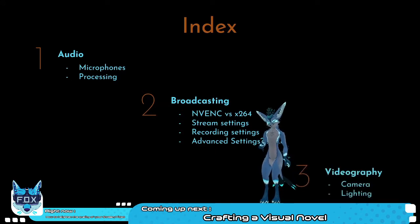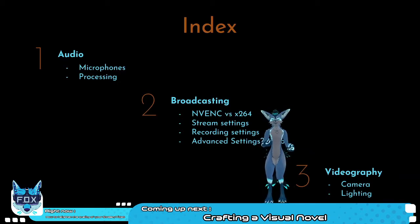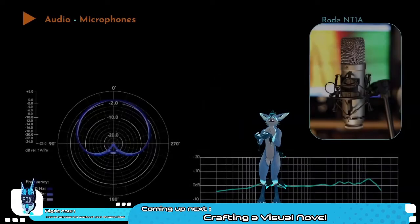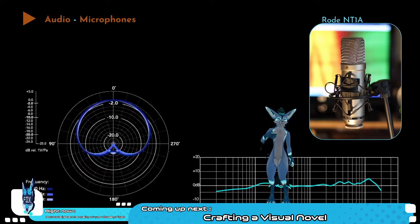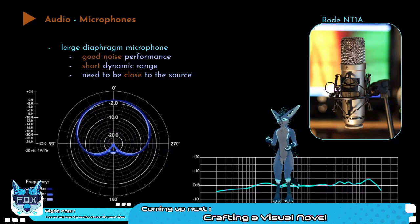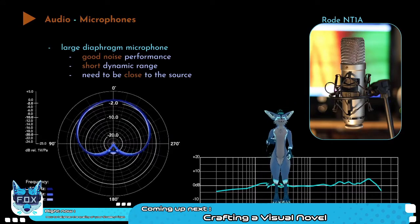I'm guessing most of you are using a large diaphragm microphone like the Rode NT-A1. Large diaphragm microphones have very good noise performance because of their large membrane — they generate more voltage, so they can make your voice sound a bit nicer. The problem is they have a very short dynamic range, so from you being too quiet to clipping because you're screaming is a very short range. You also have to be rather close to the microphone, because of the large membrane you need a lot of air force to move it. Those aren't the perfect microphones for a stream setup; they're used in studio setups because the frequency pickup is flat, but you need an audio engineer managing it constantly.